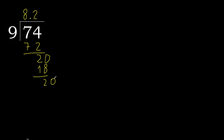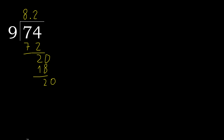Complete. The decimal point is here. We have 20 again. 9 multiplied by 2 is 18 — not greater. Subtract.